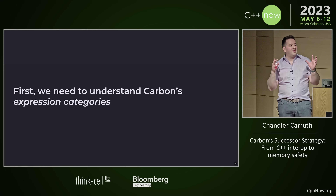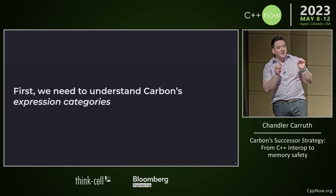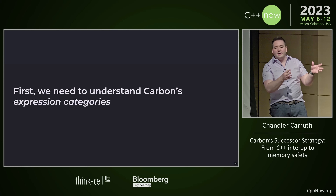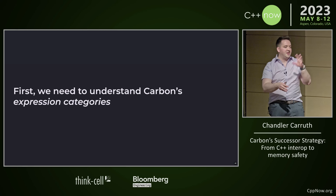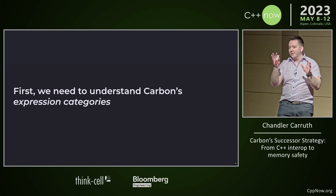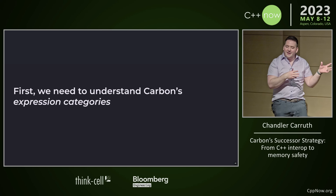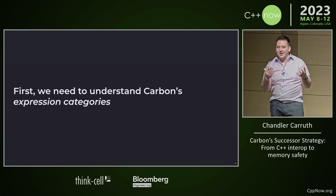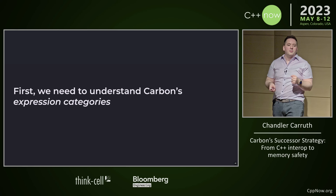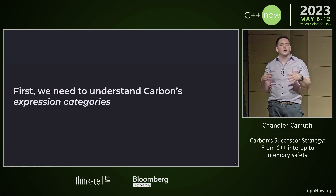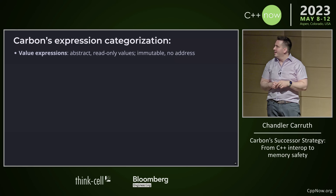Unfortunately, parameters in Carbon are really different from C++. We had some good reasons for that, but they are really different. Carbon's parameters are actually defined in terms of something else, so we've got to start somewhere else. Now I have to teach you a little bit of Carbon. First, we need to understand Carbon's expression categories — its analogous component to C++'s value categories. You know C++ value categories: L-values and GL-values and X-values and R-values. In Carbon, we're calling these expression categories, and we have a somewhat different set — we're trying to simplify things a little bit.